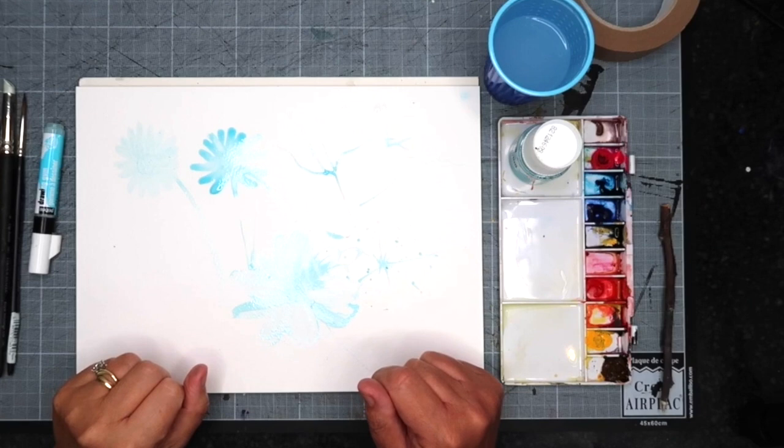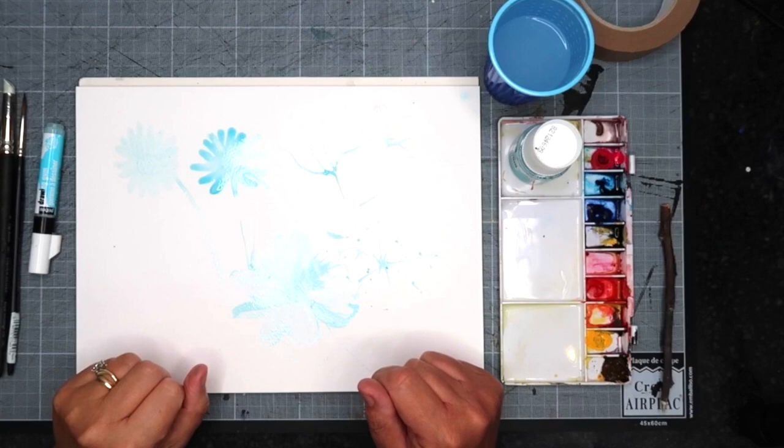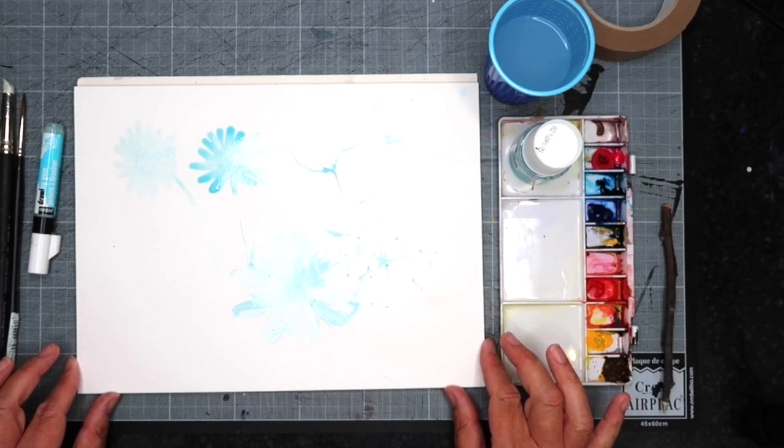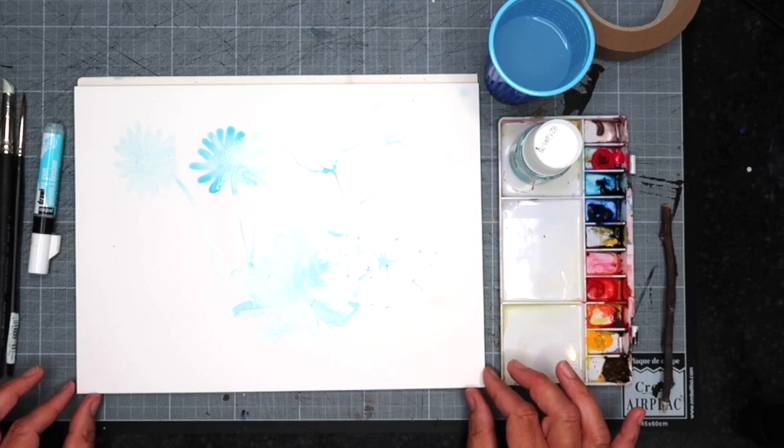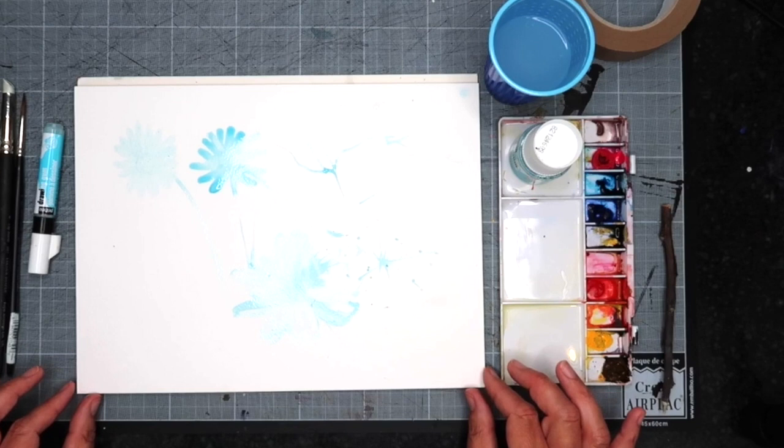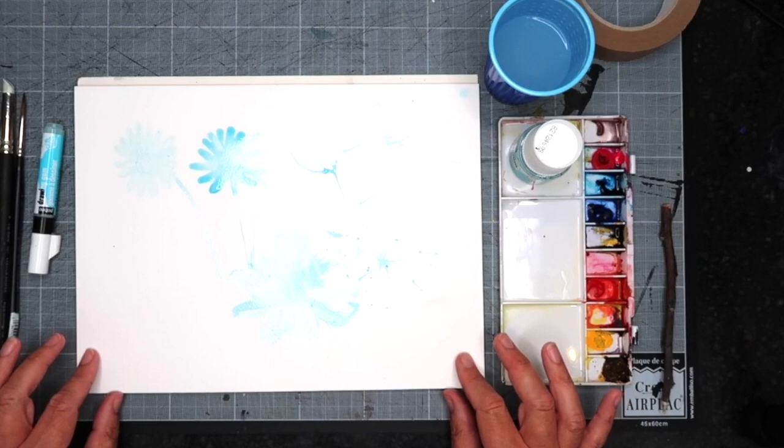The other reason masking fluid may tear your paper is the paper may not like masking fluid. Some papers are very sensitive on the surface and they just don't like masking fluid, so when you're taking it off it just rips the paper. I definitely recommend Windsor & Newton's Artist watercolor paper, Saunders Waterford watercolor paper, and Arches watercolor paper. They are more expensive brands but they don't seem to mind masking fluids.